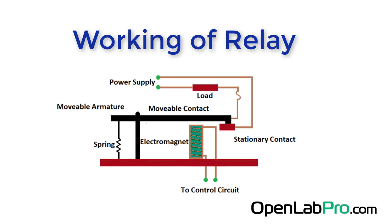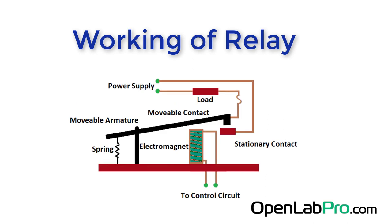On the other hand, if the relay was already de-energized when the contacts were closed, then the contacts move oppositely and make an open circuit. As soon as the coil current is off, the movable armature will be returned by a force back to its initial position.